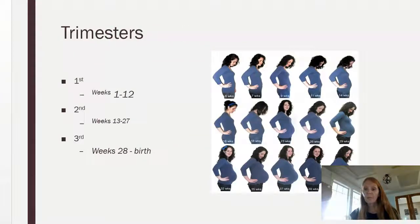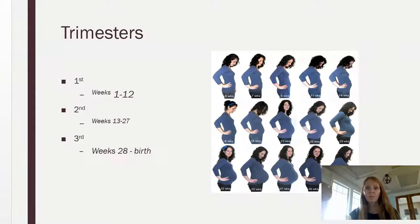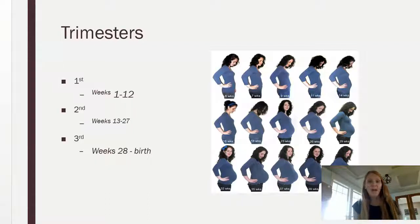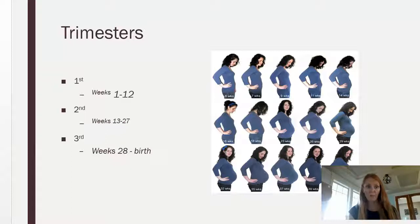When we're coding with ICD-10 in pregnancy coding we need to know the trimester the patient is in. Weeks 1 through 12 are trimester 1. Weeks 13 through 27 are trimester 2. Weeks 28 through birth or delivery are trimester 3.